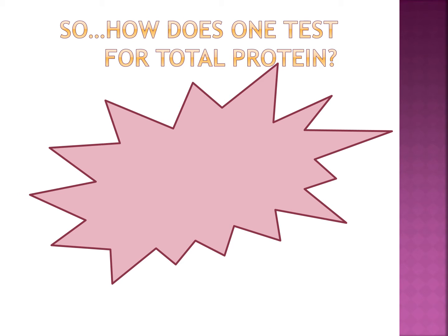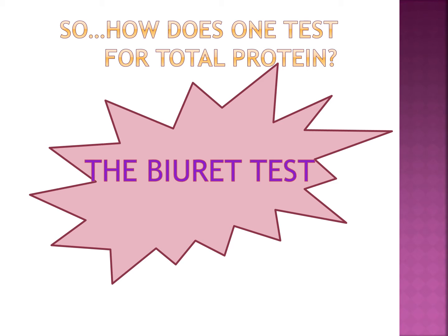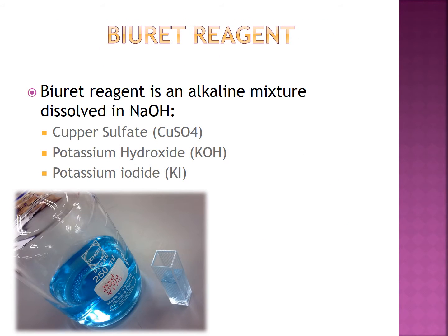As medical laboratory scientists, how can one test for the presence of total protein in a sample? We can utilize the Biuret test, which is a test that has been in use since the end of the 19th century. As seen here, the Biuret reagent is an alkaline mixture dissolved in sodium hydroxide and contains copper sulfate, potassium hydroxide, and potassium iodide.